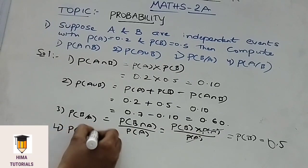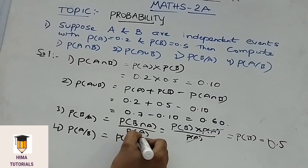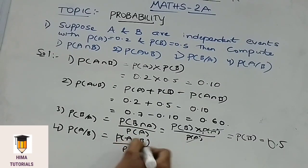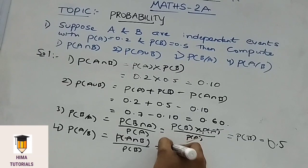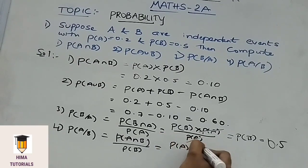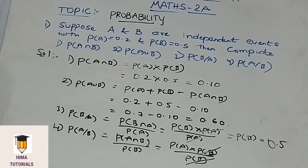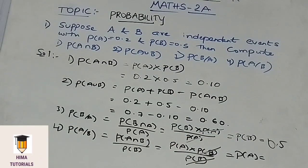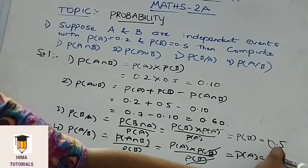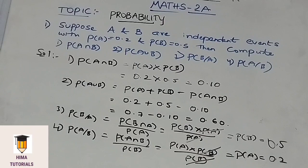Now P of A given B is given by P of A intersection B by P of B. Since A and B are independent events, P of A intersection B is written as P of A into P of B, divided by P of B. The P of B cancels, giving P of A, which is 0.2. So P of A given B is 0.2. I hope it is clear. Please make a note of it.